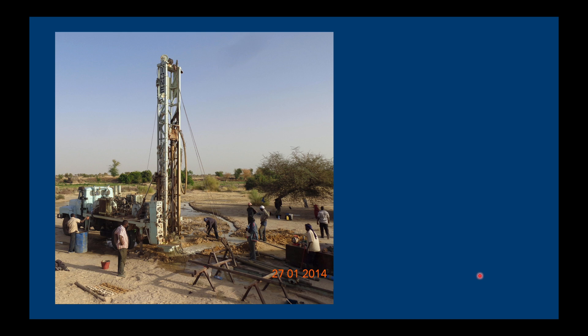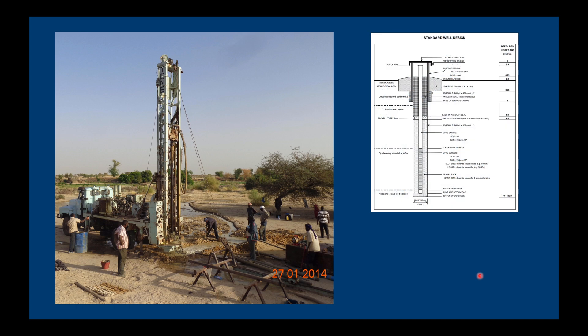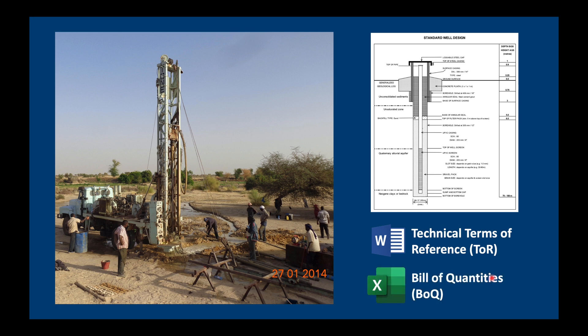To summarize: we need to have a very clear idea of what we want to achieve. Then we need to make a design — even if quite rough — of how deep our well is going to be and what materials are needed. We write all this up in the technical terms of reference. And finally, everything needs to be listed in the bill of quantities — all the materials, everything that needs to be paid, should be in the bill of quantities.